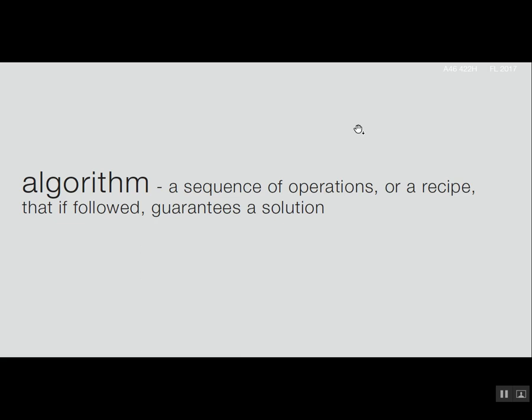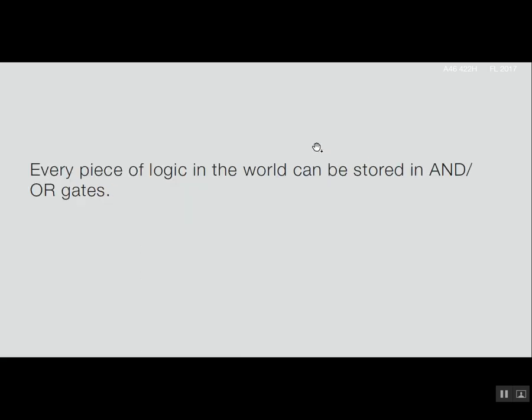When you take binary data and combine it together, you create what's known as an algorithm — essentially a recipe. You guys know what algorithms are; it's basically a Grasshopper script, a recipe: step A, step B, step C. Using an algorithm, you essentially create a computer program, and that computer program stores data using AND or OR gates. Every piece of logic in the world can be stored in AND/OR gates.